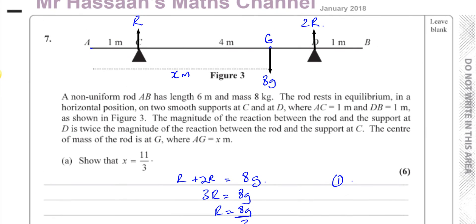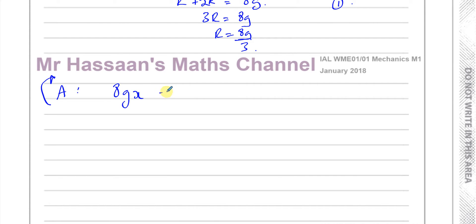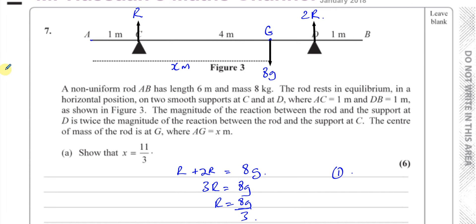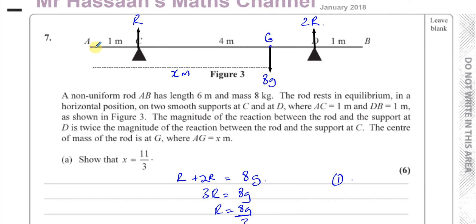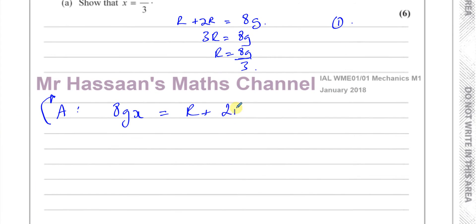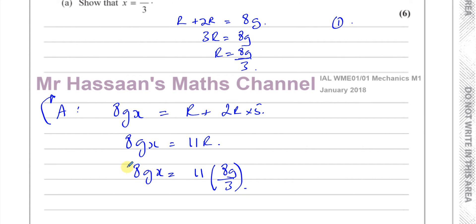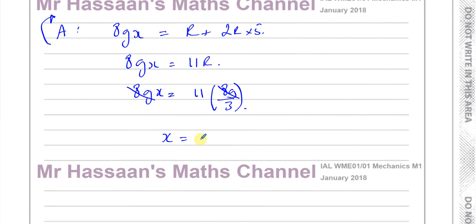Taking moments about A: the clockwise moment is 8g times x. The anti-clockwise moments are r times 1 — the distance to support C — plus 2r times 5 — the distance to support D. So 8gx equals r plus 10r, which is 11r. Replacing r with 8g over 3 gives 8gx equals 11 times 8g over 3. The 8g cancels from both sides, leaving x equals 11 over 3. That proves x equals 11 over 3, completing part a.